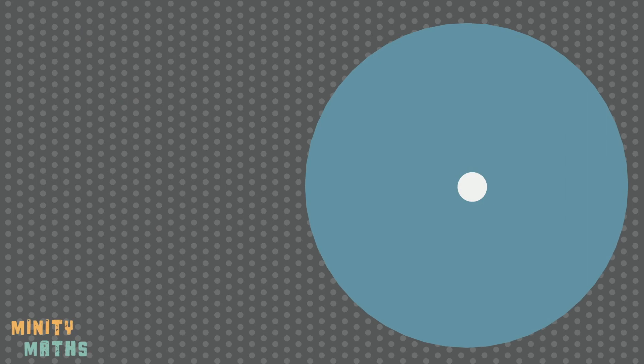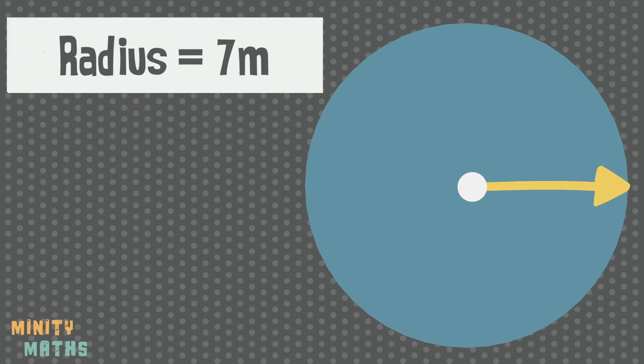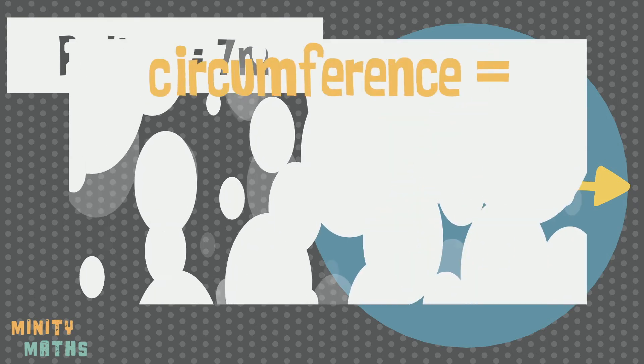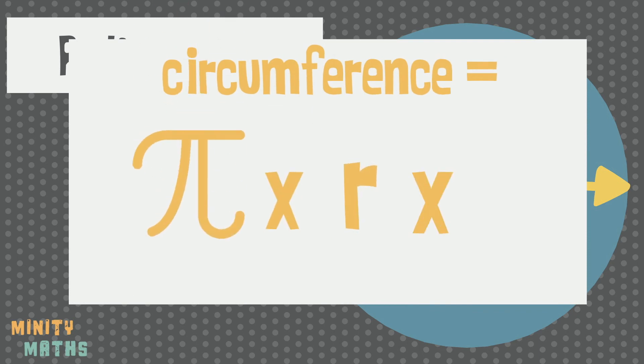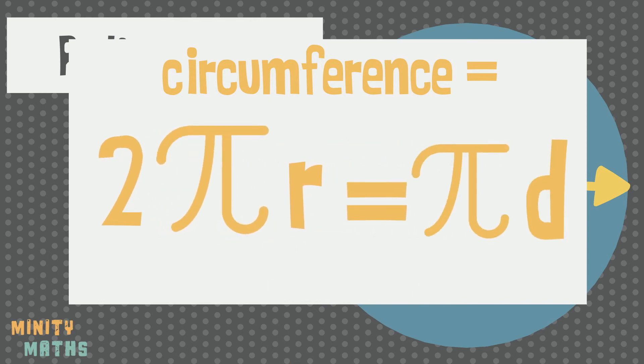But what if we are given the length of the radius rather than the diameter? Well, we know that the radius is half of the diameter, so we can just times the radius by pi and then double it. You may have seen this alternative formula for calculating the circumference. This formula is equivalent to pi times d.